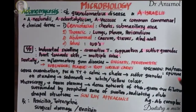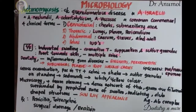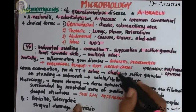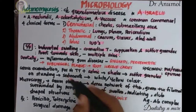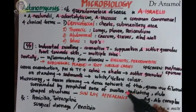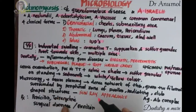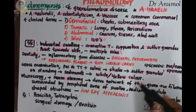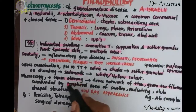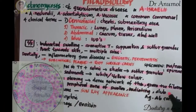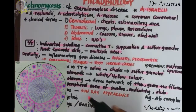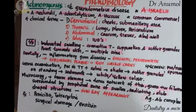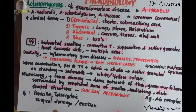The specimens commonly collected are pus, tissue, and sputum. On gross examination, we collect pus in a test tube, mix it with saline, shake it, and we can find sulfur granules. On standing, these sulfur granules sediment and are usually white or yellow in color. On microscopic examination using gram staining, we can see a dense network of thin gram-positive filaments surrounded by peripheral zones of swollen, radiating, club-shaped structures, giving a sunray appearance. The clubs are considered antigen-antibody complexes.